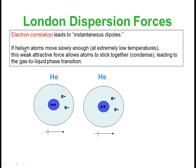So like I said, if the helium atoms move slowly enough, this weak attractive force will allow them to condense. And that's what allows substances like helium to condense at a low enough temperature. Here's another really important thing. London dispersion forces operate between all molecules and atoms. So anything that has electrons is going to engage in London dispersion forces.